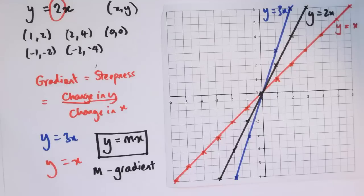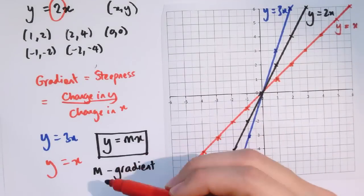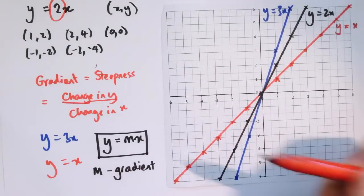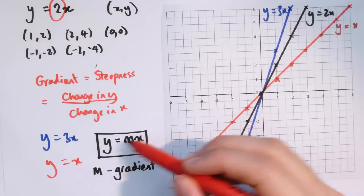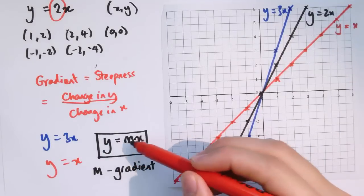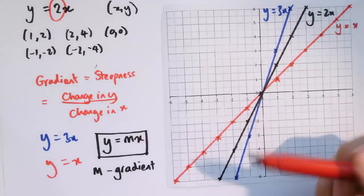In general, if we have y equals m times x, then m is the gradient of the line. Every time x goes up by 1, y goes up by m times 1, which is just m — so that gives us the gradient.